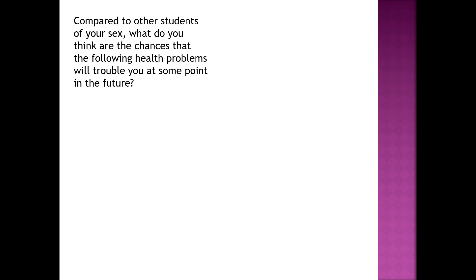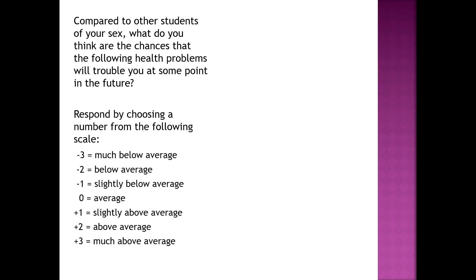You're thinking of people who are like you in basic age and sex. What do you think your chances are that you would have one of these health problems? You can respond on a scale from negative three, which is much below average, to positive three, which is much above average. If you think you're just average on the risk, give yourself a zero. Below average gets a negative one, two, or three; above average gets a positive one, two, or three.